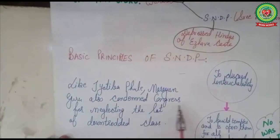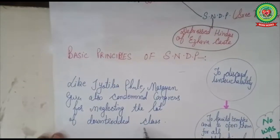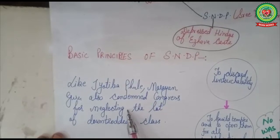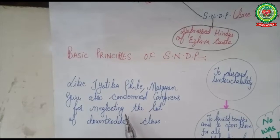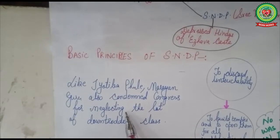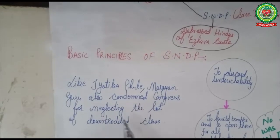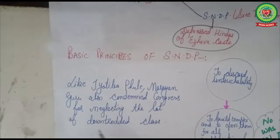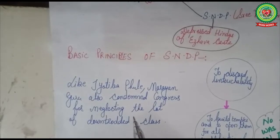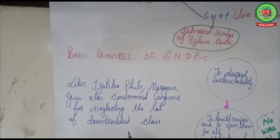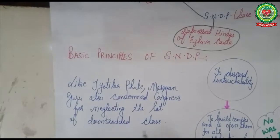This reflected his idea that if a person does not give equal respect to other human beings, he cannot be a devotee of God. Like Jyotiba Phule, Narayan Guru also condemned Congress for neglecting the downtrodden class. It was not that Congress was against the lower caste people, but at that time Congress had no link with the common people. It was formed as a link between the British government and the people, favoring British policies, which is why early Congress was criticized by social reformers.